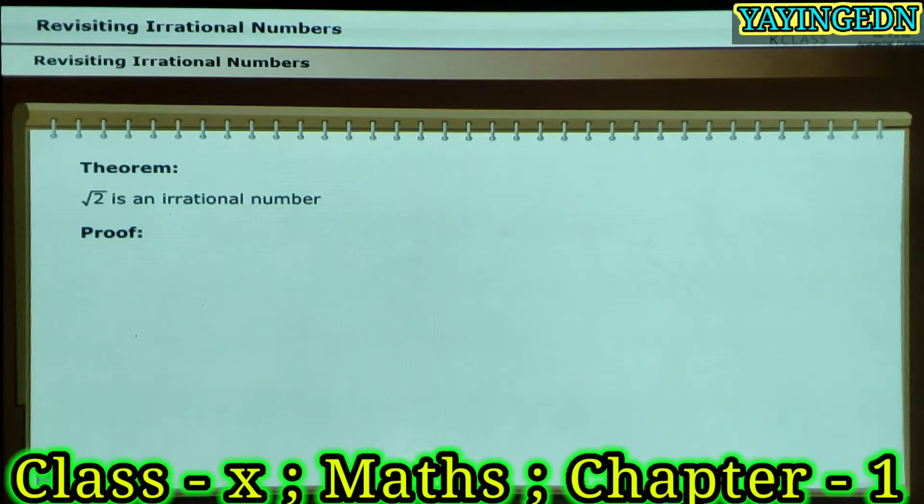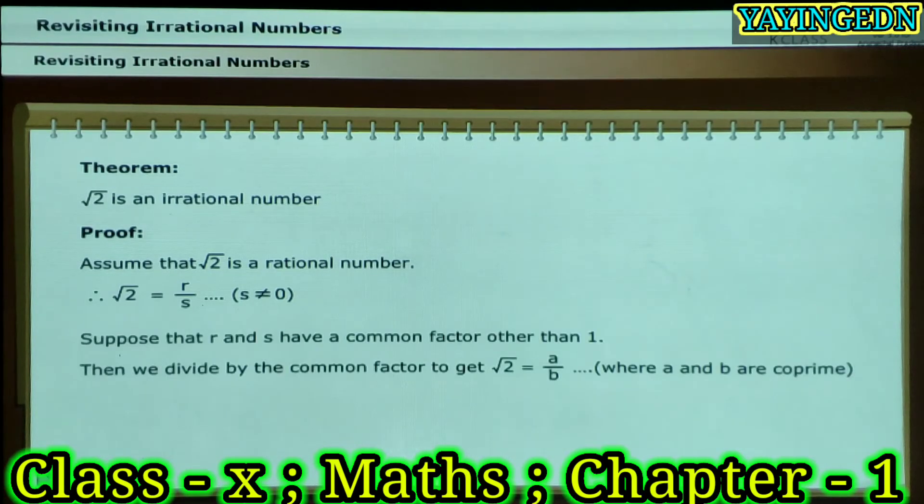This is how we proceed with the proof. Assume that the square root of 2 is a rational number. So, we can find integers R and S, where S is a non-zero integer, such that square root of 2 is equal to R upon S.